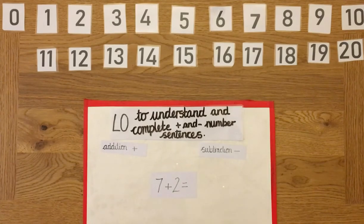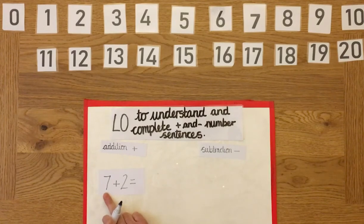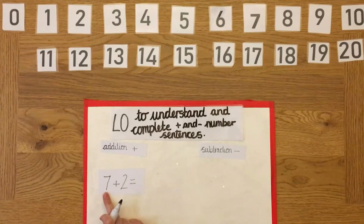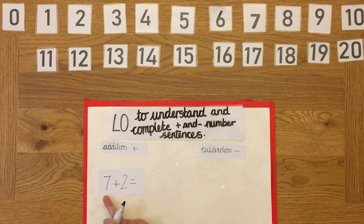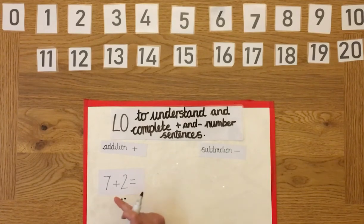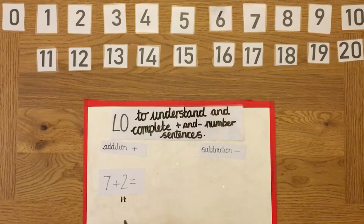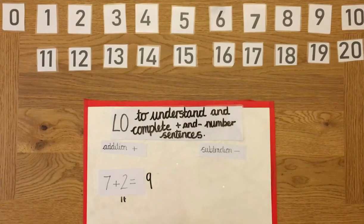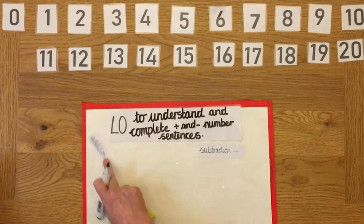What's this? Brilliant — this is an addition, we're adding these two numbers together. The number sentence says seven add two equals. I'm going to do dots, but I don't need to do dots for the seven because I know seven. So I'll do two dots for the adding on — I've got seven in my head: eight, nine. Seven adding two equals nine. Great job! That's a different way of doing an adding number sentence.